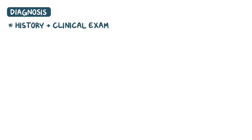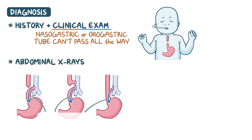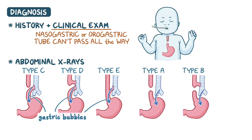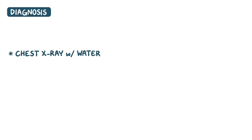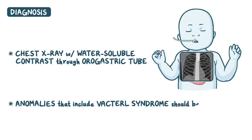Diagnosis of both conditions starts with a full history and clinical exam. Clinically, a nasogastric or orogastric tube wouldn't be able to pass all the way from the mouth to the stomach. Imaging exams include abdominal x-rays, where you can see a large gastric bubble in type C, D, and E, but not in type A and B, since in these two there isn't a communication between the distal esophagus and trachea. Chest x-rays with a water-soluble contrast solution injected through the orogastric tube shows the anomalies and gives the final diagnosis. Additionally, anomalies that include the VACTERL syndrome should be assessed.